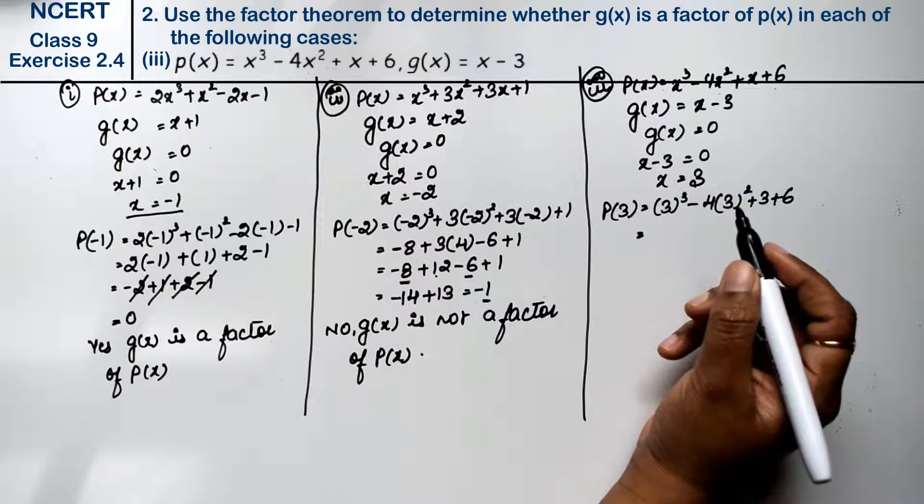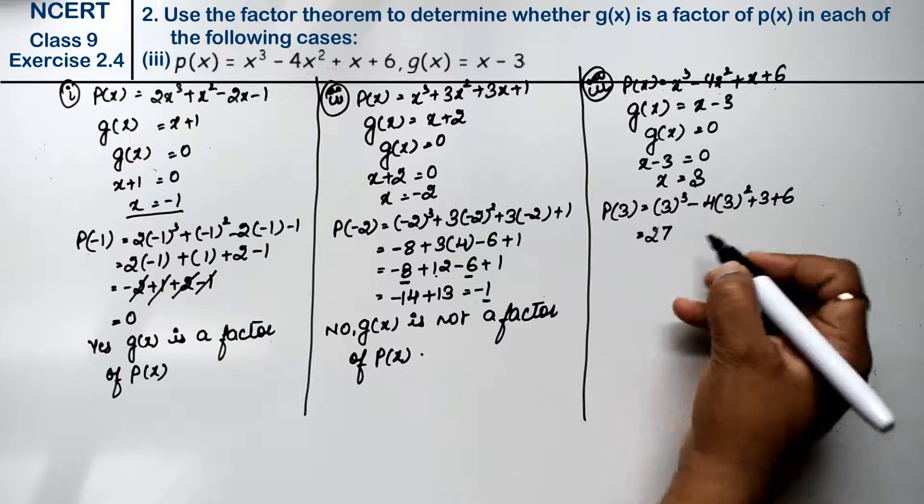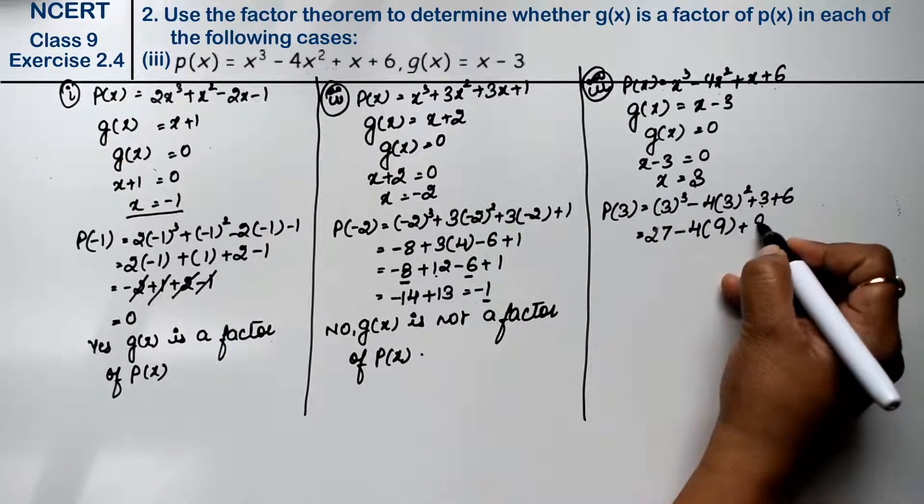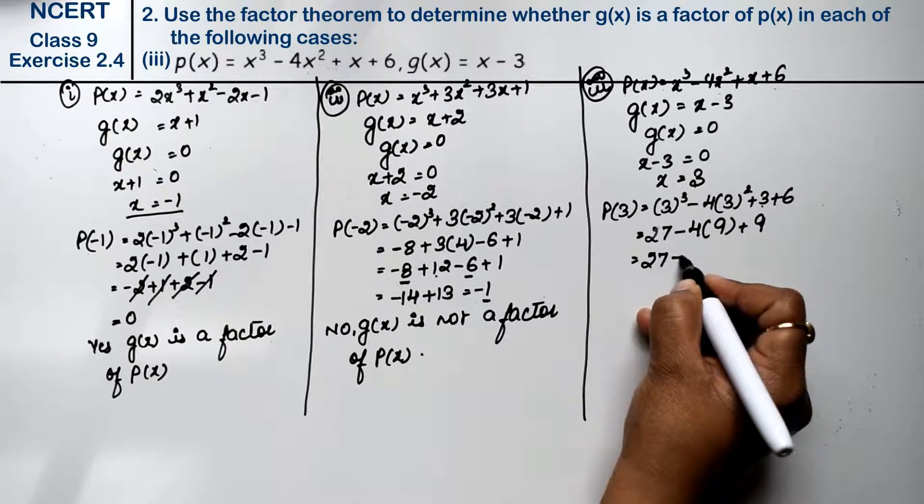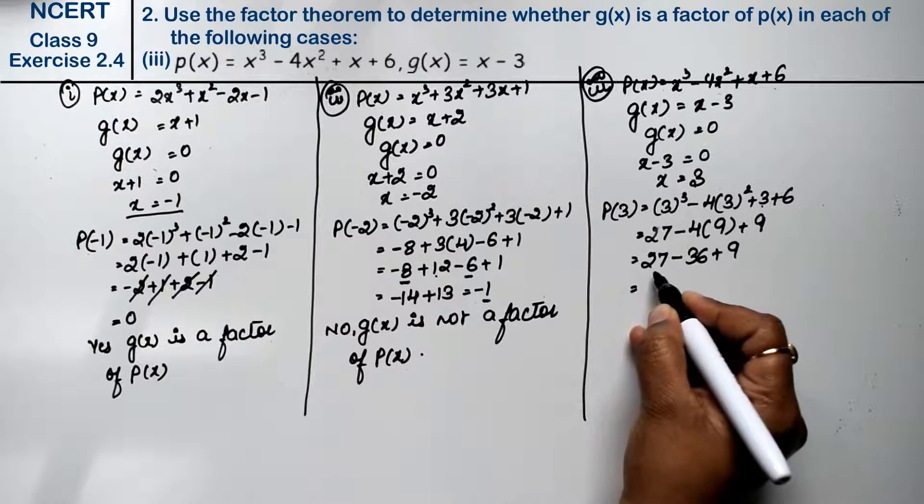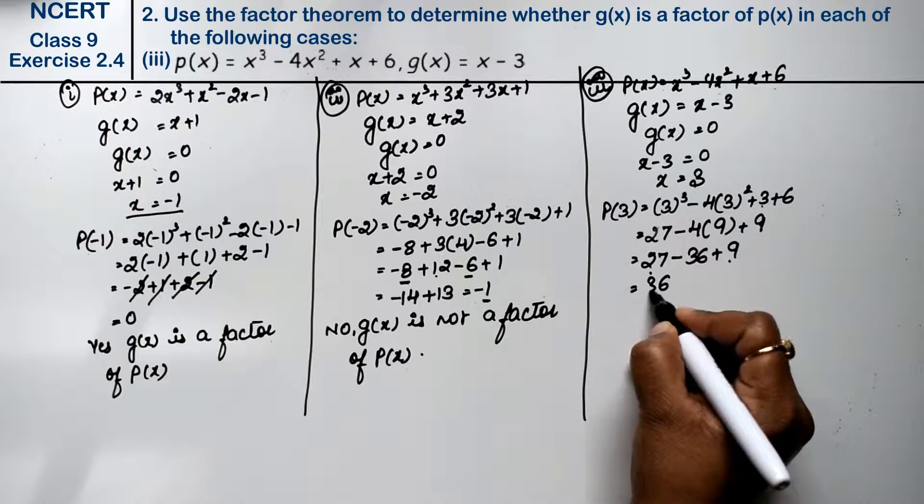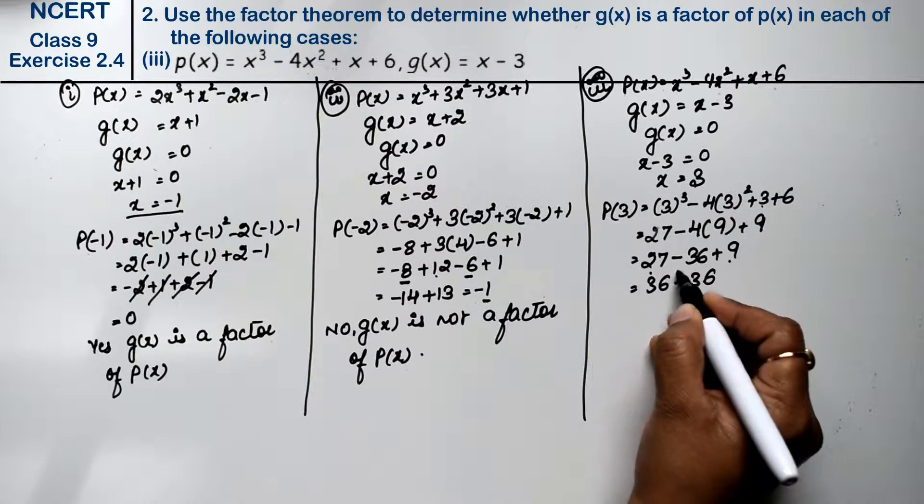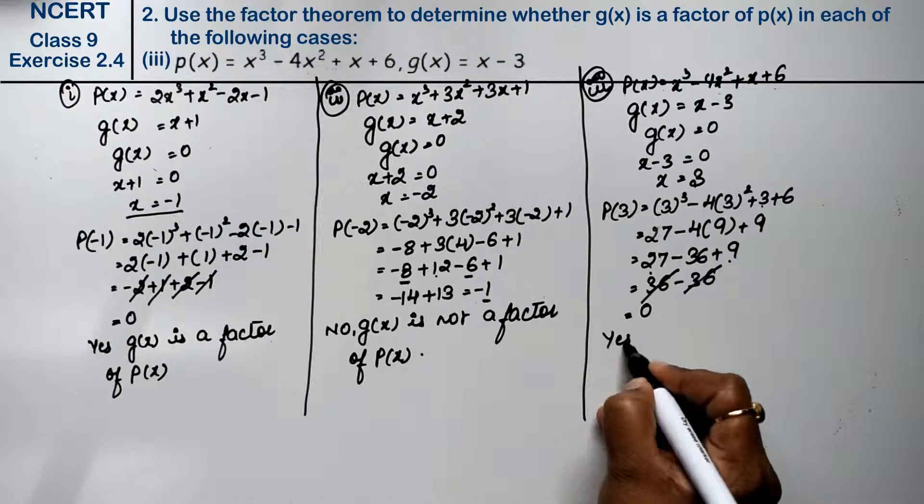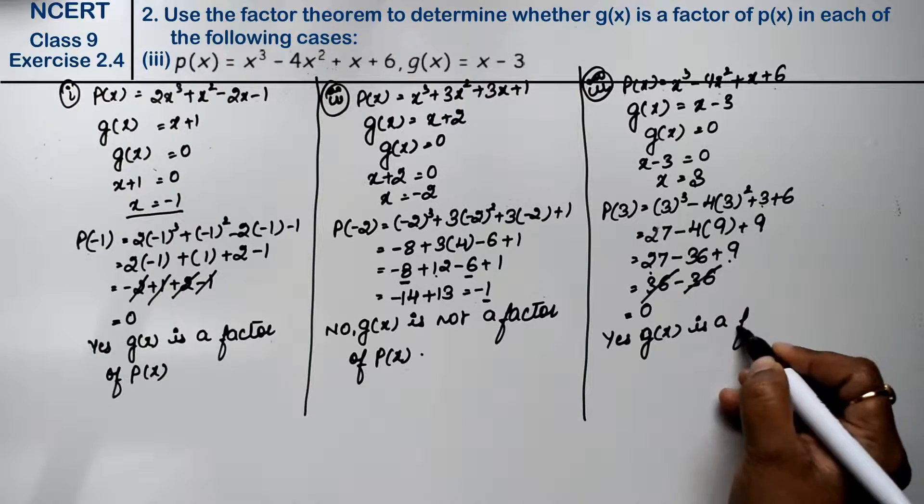So: 3³ - 4 × 3² + 3 + 6. So: 3 × 3 × 3, that means 3 × 3 = 9, 9 × 3 = 27. Minus 4 × 9. Plus 3 + 6 = 9. Now see: 27 - 36 + 9. Now 27 and 9 are plus, so we will add that: 36. 36 - 36 = 0. So answer is 0. So yes, g(x) is a factor of p(x).